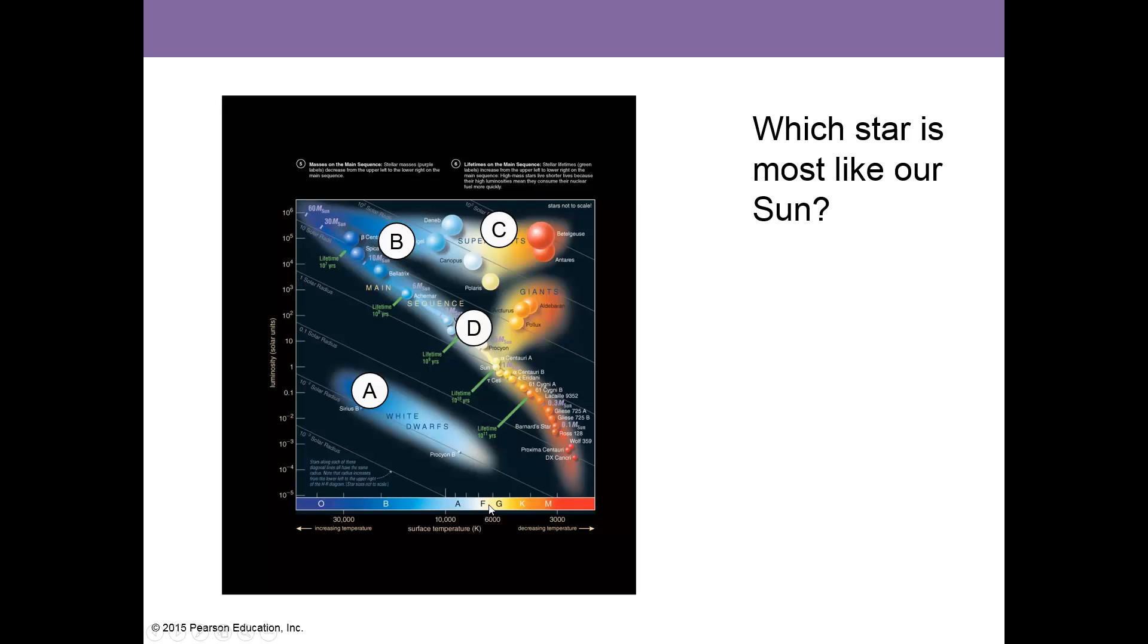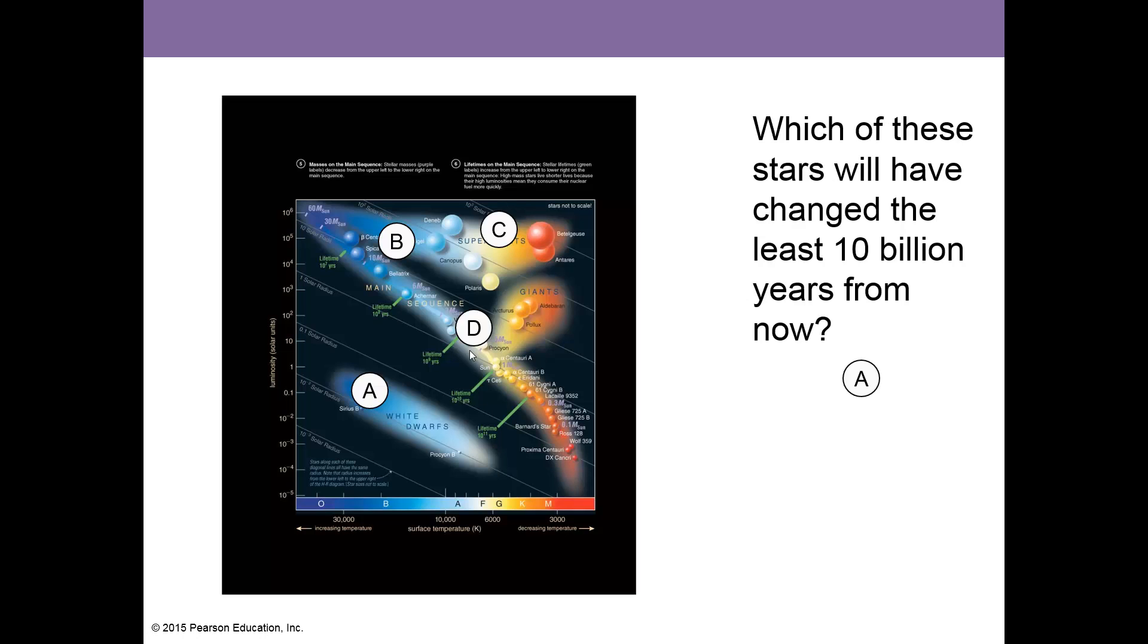Back on the HR diagram, which star is most like our Sun? That's going to be D. Which of these stars will have changed at least 10 billion years from now? That's going to be A, the white dwarfs, the dead stars. They've used up their hydrogen fusion and they're dead. They're just cooling off.